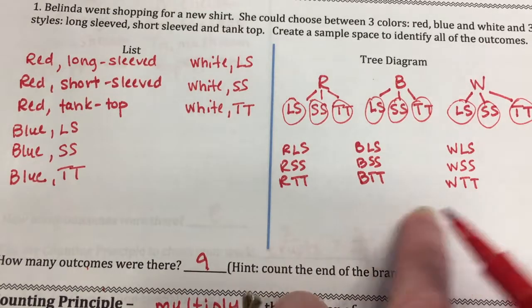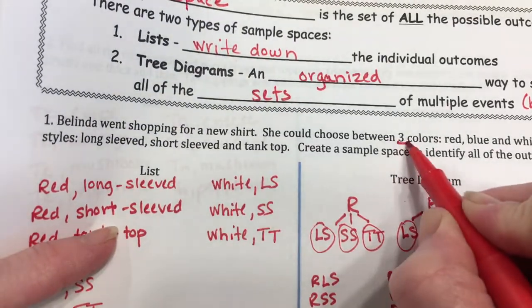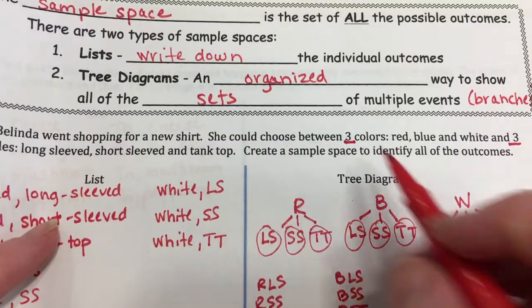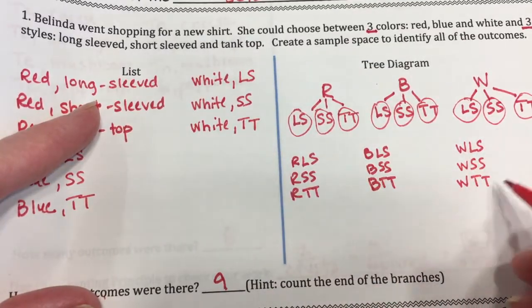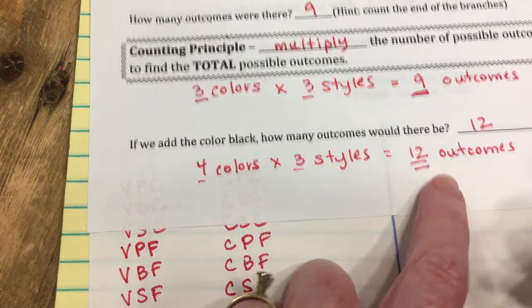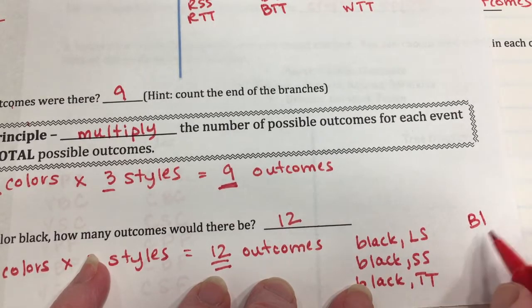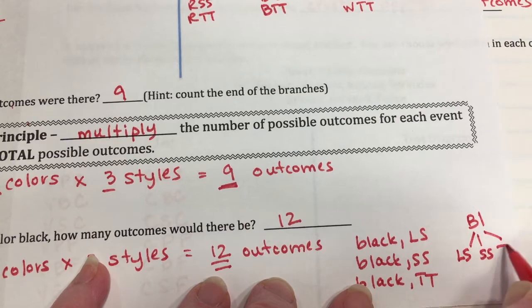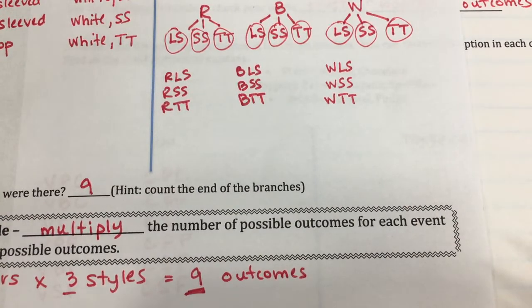Either way, I can see there are nine possible outcomes. You can check your work with the counting principle — we started with three colors and three styles, so three times three equals nine, which matches. If we add the color black, we now have four colors, so four times three styles equals 12 outcomes. We'd add another branch for black with long sleeve, short sleeve, and tank top — three more added to nine gives 12.